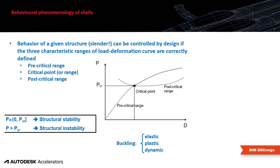The behavior of a given shell structure can be controlled by correctly defining three characteristic ranges of load-deformation response. I want to begin with this theoretical explanation so you have a solid foundation for what comes next. The three key ranges are: the practical range, the critical point, and the post-critical range — each is important for understanding the structural behavior of a shell.